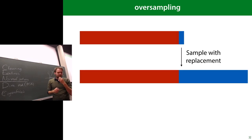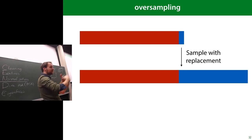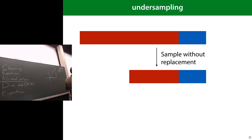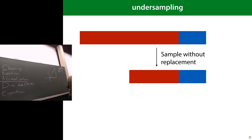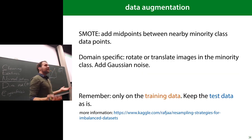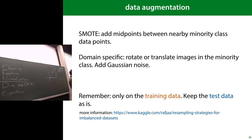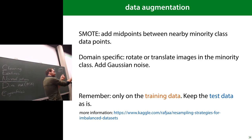Two simple ways to address class imbalance in your training data: oversampling — randomly resample your minority class with replacement to create better balance; or undersampling — remove examples from your majority class to avoid duplicates. For something fancier, try data augmentation so new samples aren't duplicates but are slightly modified versions — adding a little noise, or using an algorithm like SMOTE, which finds midpoints between existing minority-class points.